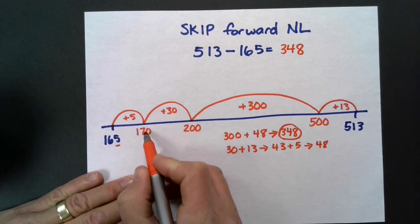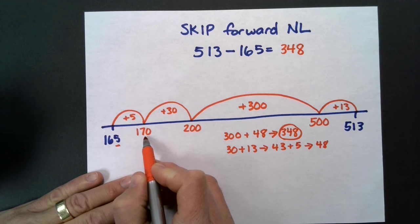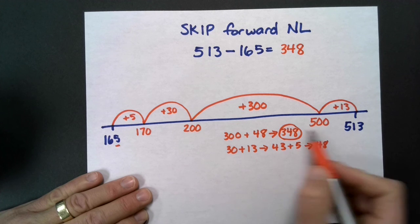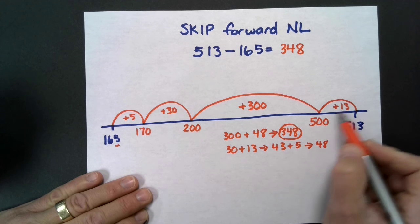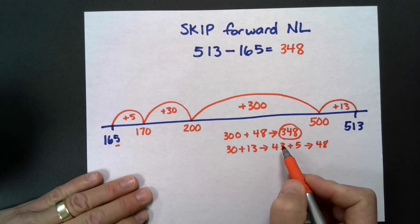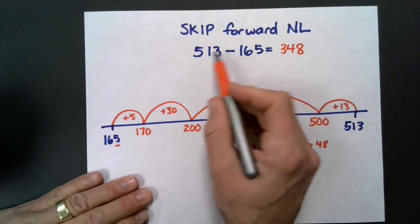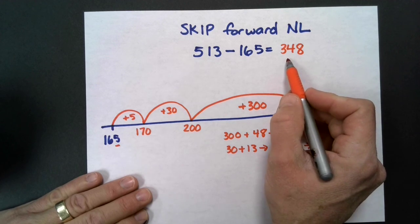So skipping forward 5, 30, 300, 13, always going to the next decade, next 100, matching hundreds in the number, and then the remaining part, adding them all together to find out how to skip forward from 165 to 513. The answer is 348.